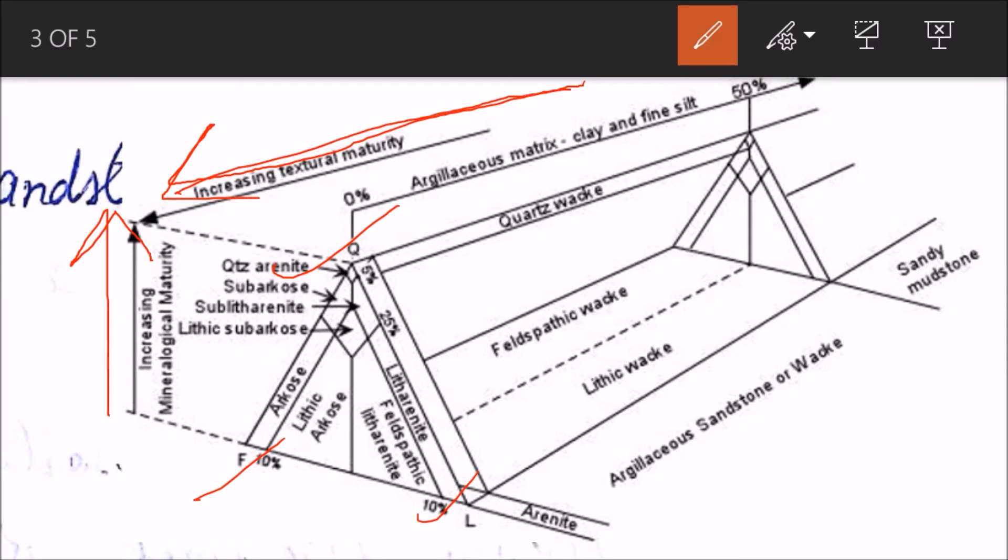So grains are much bigger in size, more rounded, and more sorted as you come here, as you have seen in the table we discussed in the last lecture. Then we have, you see this portion is called quartz wacke.